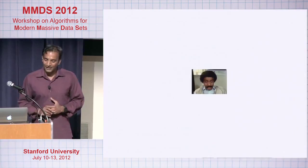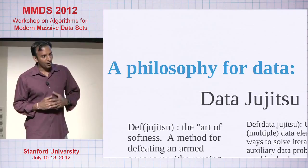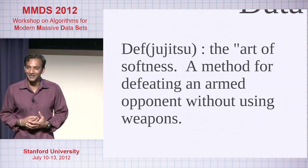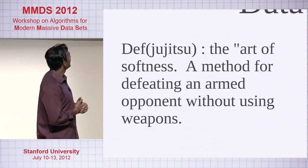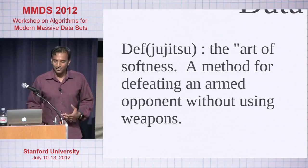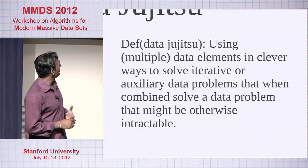So how do we take all that and position it into actually building product? What I want to share is what, over the last few years, we distilled into a philosophy of how to work with data products. We call this Data Jiu-Jitsu. Jiu-Jitsu is the art of softness — a method for defeating an armed opponent without using weapons. Our formal definition: using multiple data elements and clever ways to solve iterative or auxiliary data problems when combined solve a problem that might otherwise be intractable.